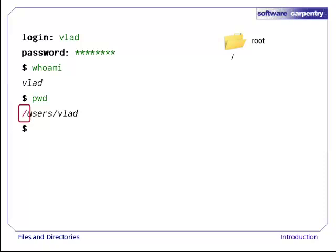Inside that directory, or underneath it if you're drawing a tree, are several other directories, such as bin, which is where some built-in programs are stored, data, users, where users' personal directories are located, temp, for temporary files that don't need to be stored long-term, and so on.